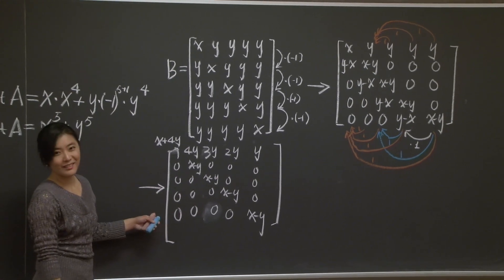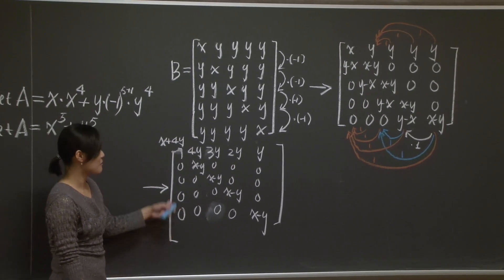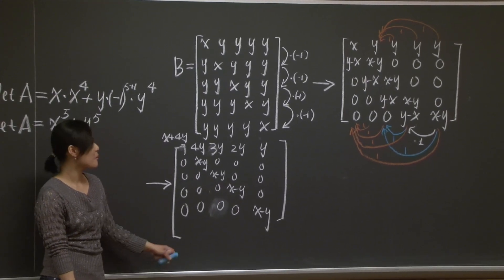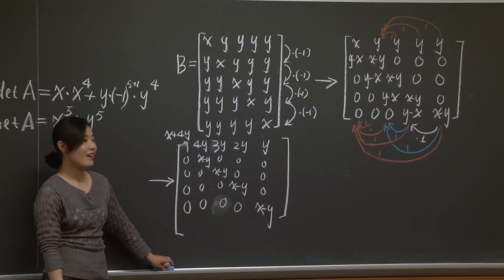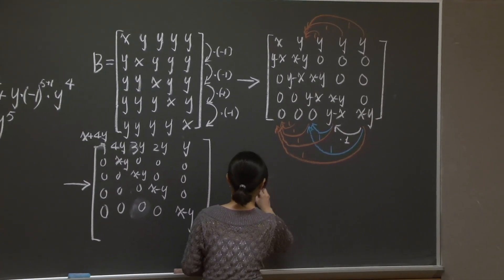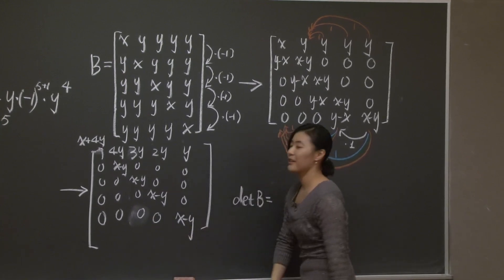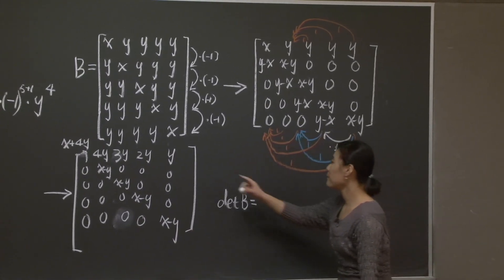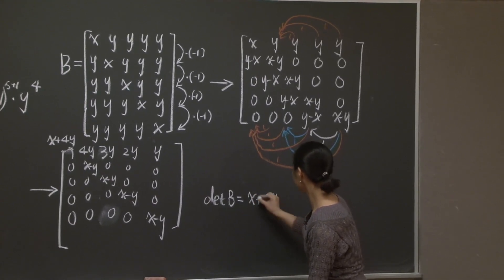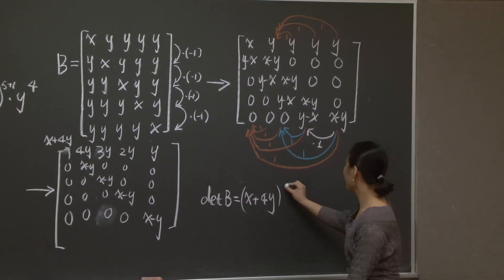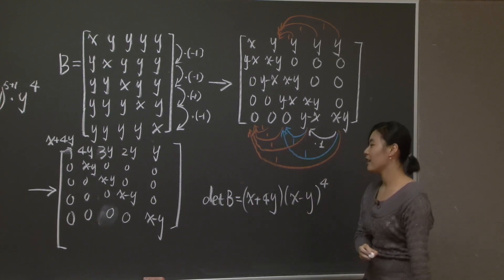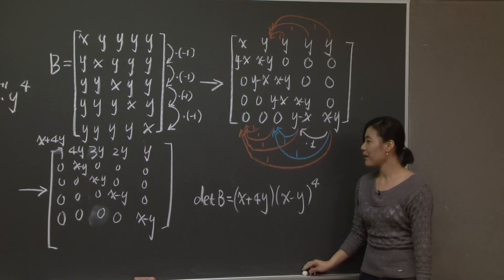This is fun, and the result is really nice. This is wonderful because this is simply upper triangular matrix. Now you tell me what is the determinant of B. The determinant of B is the determinant of this upper triangular matrix. So you simply multiply everything together. That's x plus 4y times x minus y to the fourth power.